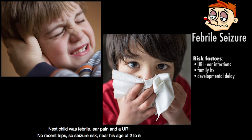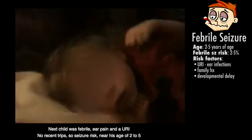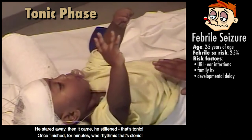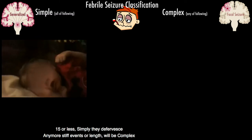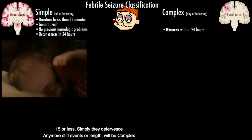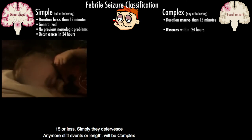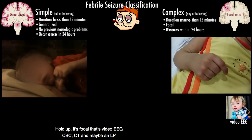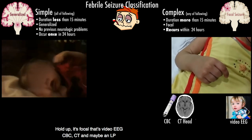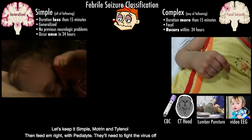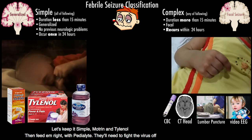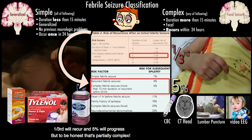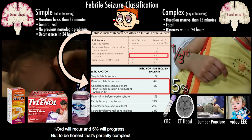Next child was febrile — ear pain in the URI. No recent trips, near his age of 2 to 5. He stared away, then it came — he stiffened. That's tonic. Once finished for minutes, what's rhythmic? That's clonic. 15 minutes or less: simple febrile seizure — they defervesce. Any more stiffening or focal activity — that's complex. Do video EEG, CBC, CT, and maybe LP. Keep it simple: Motrin and Tylenol, then feed them right with Pedialyte.